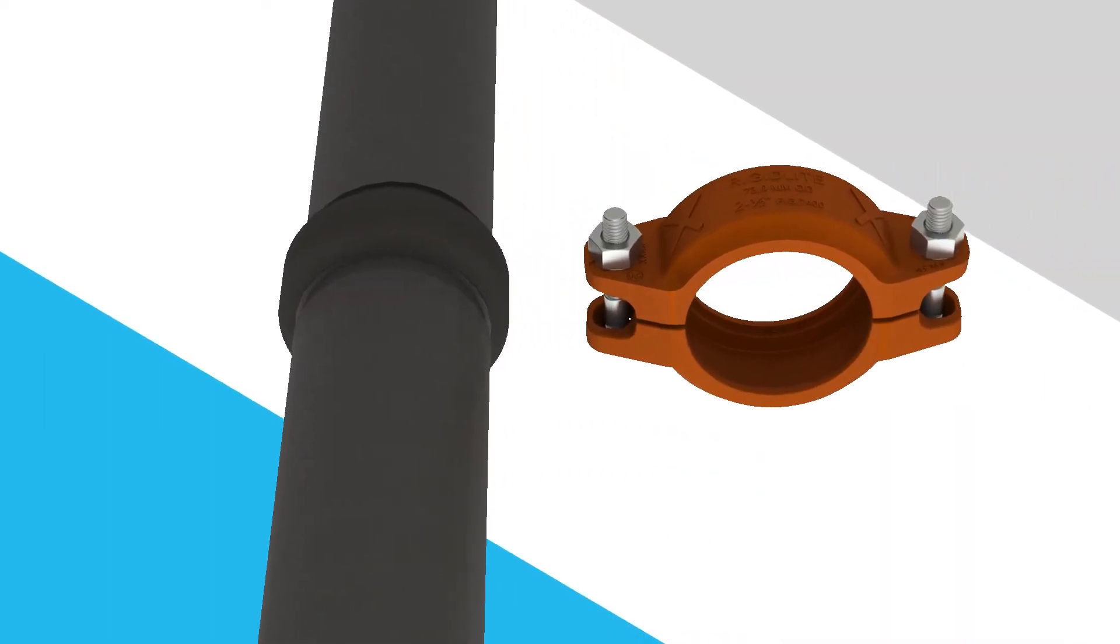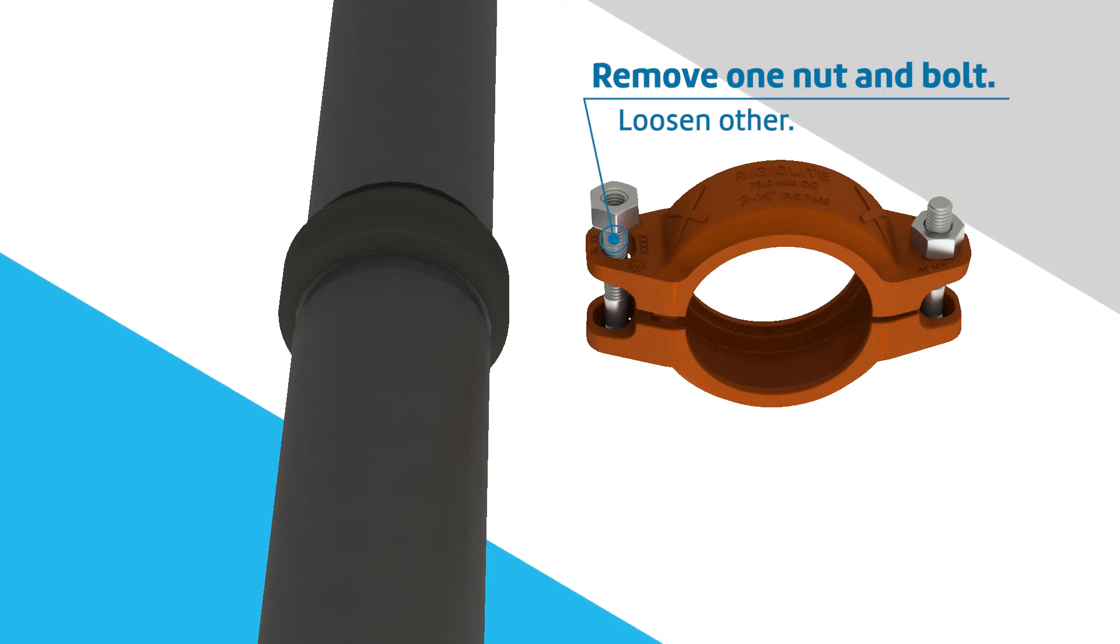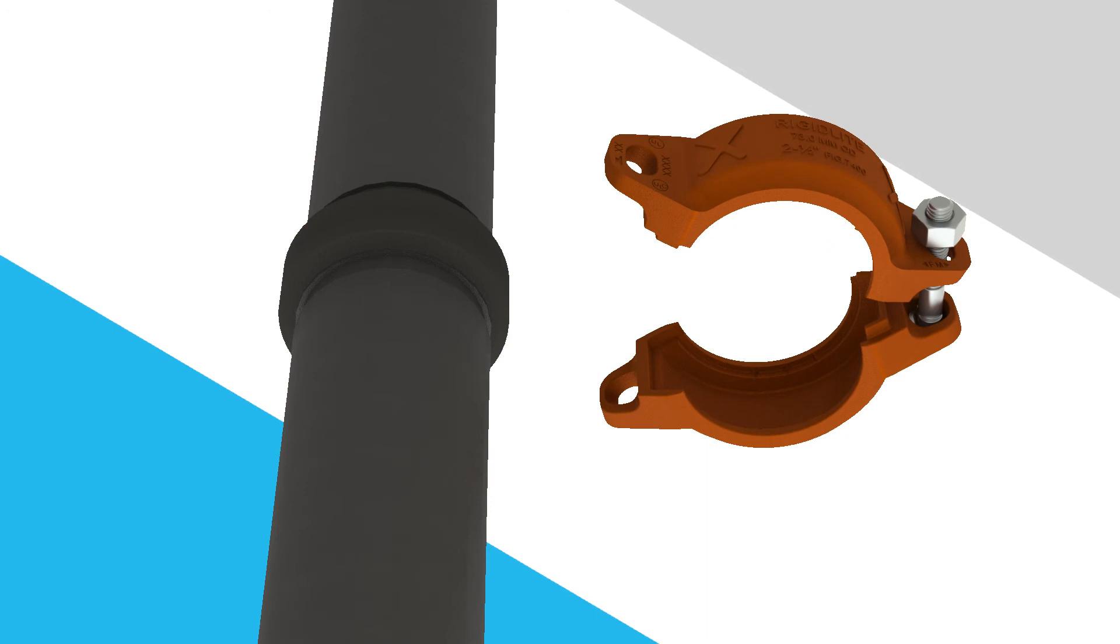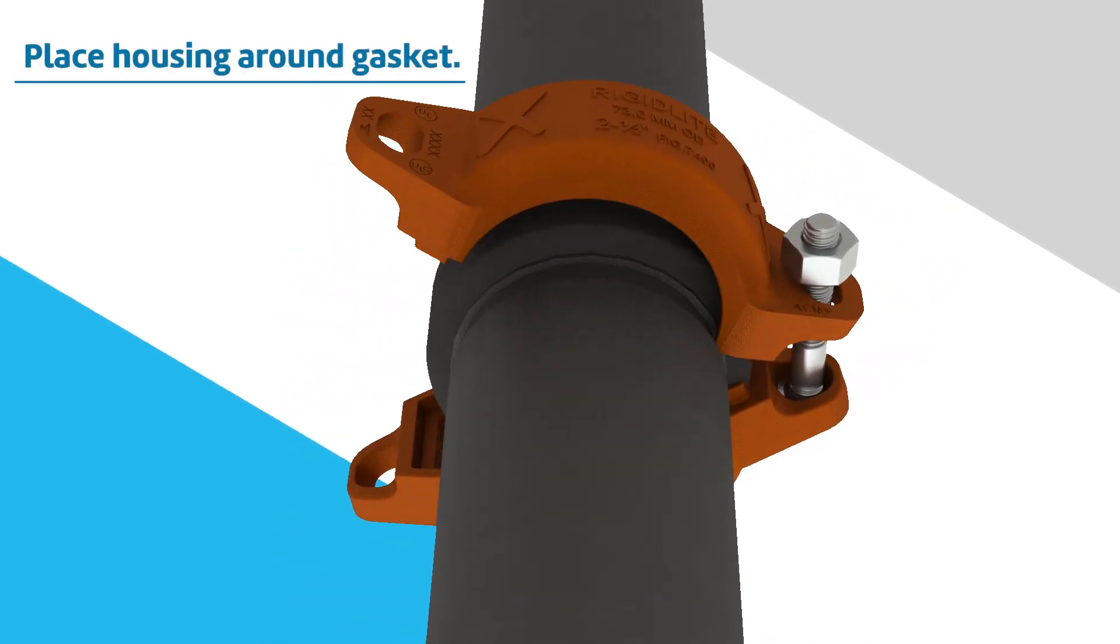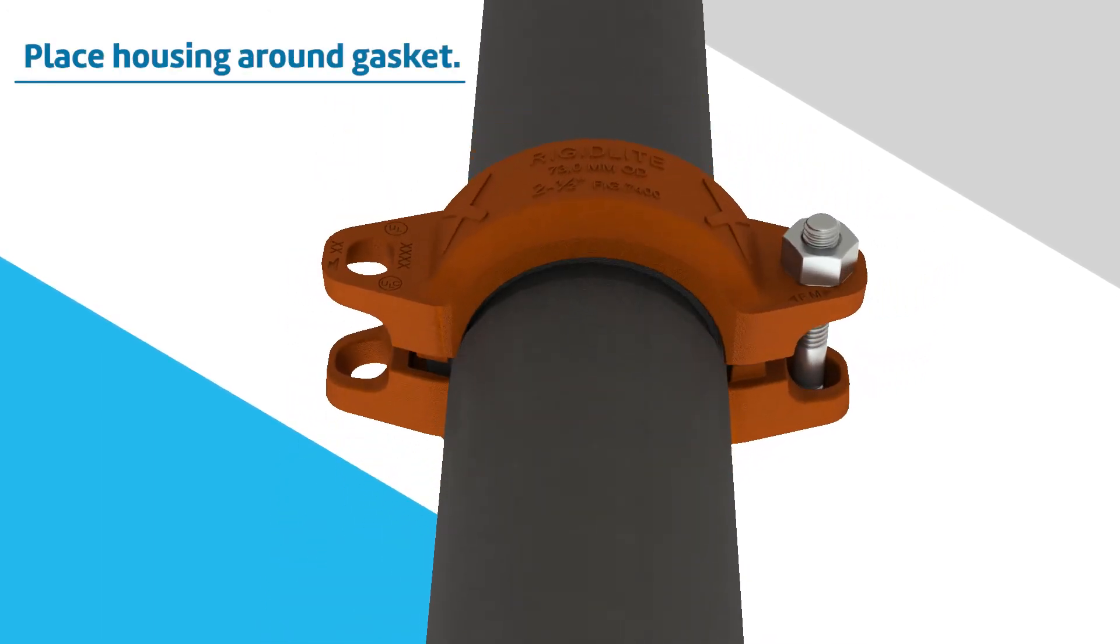Remove one nut and bolt from the coupling housing and loosen the other. Place the housing around the gasket and into the grooves on both pipes, making sure the housing keys engage the grooves.